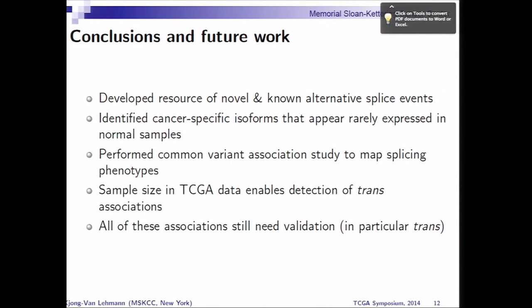Let me go to conclusions. We have developed a new resource for novel and known alternative splice events, which we will try to make available to the community as soon as we can. We identified cancer-specific isoforms that appear rarely expressed, as you saw in the heat map. We performed common variant associations to map splicing phenotypes, and the sample size in TCGA enables us to detect a bunch of trans associations. Certainly not all of them may be functional, but some of them certainly will. We're definitely looking further into them — some still need validation, particularly in trans, since they are usually hard to find, and there certainly may be some spurious associations.